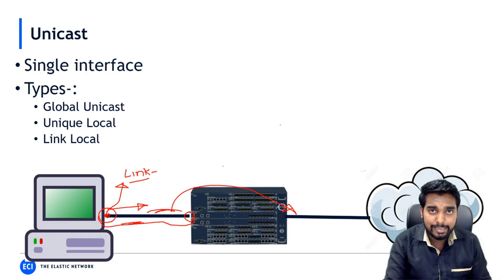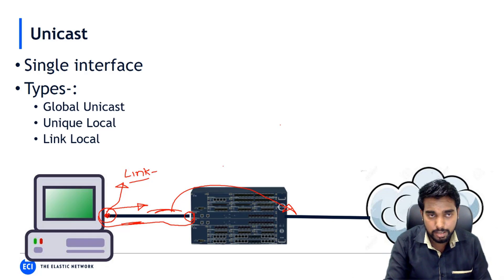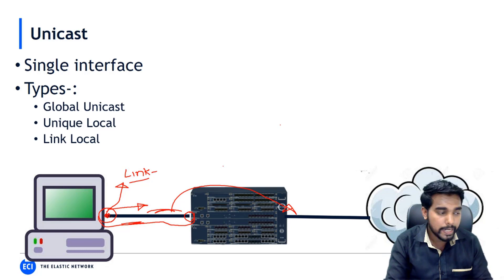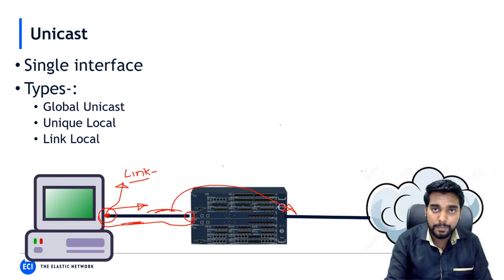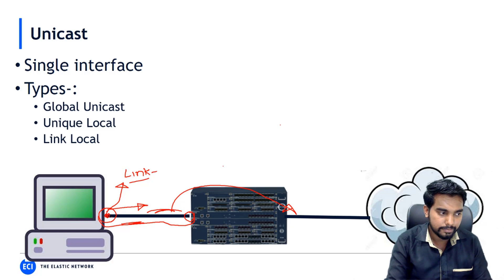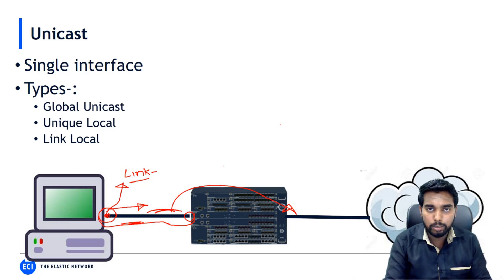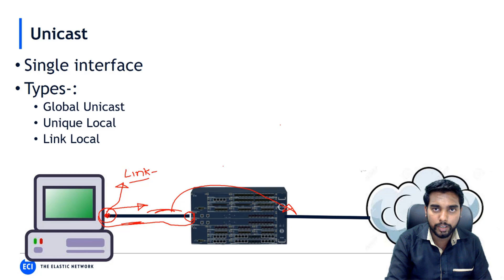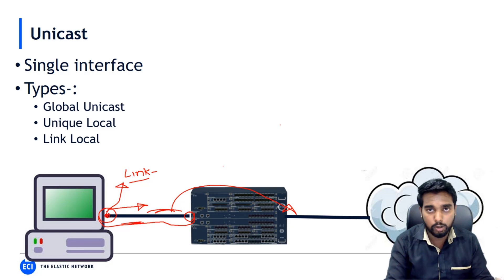Link local addresses are very useful for NDP — Neighbor Discovery Protocol — and play an important role in protocols like OSPF for forming neighborship with a peer router. They are addresses automatically configured on any IPv6-enabled interface and cannot be routed globally.